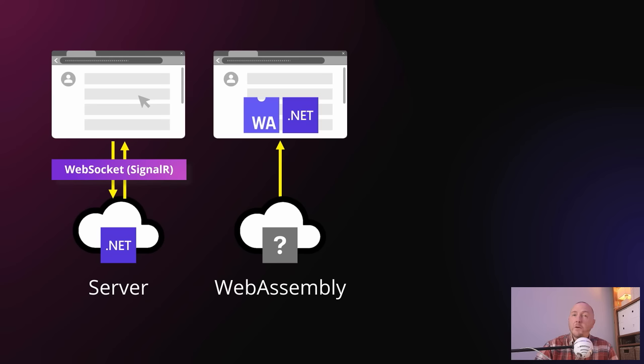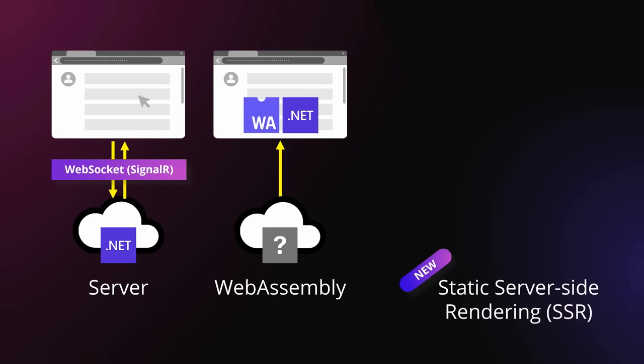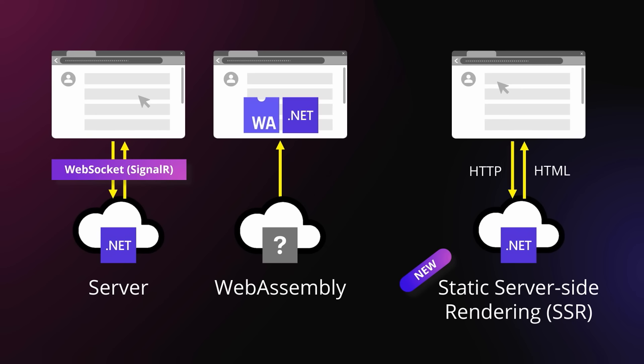Those two hosting models are not going away — they're both an essential part of what we're doing in .NET 8 and beyond. But we're now introducing a third hosting model called static server-side rendering. This is in some ways the simplest of the three modes. All we have is your .NET application running on a server, taking HTTP requests and replying with HTML — the most traditional thing web servers have always done. You still get to use the Blazor component programming model, but without needing web sockets or WebAssembly. Static server rendering is extremely good for scale: you don't need web socket connections per user, and users don't need to download WebAssembly files.